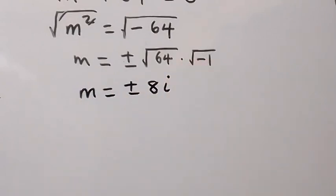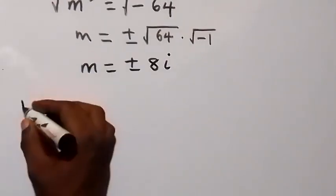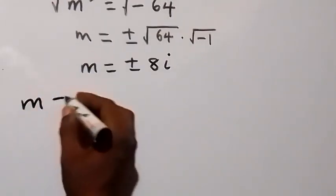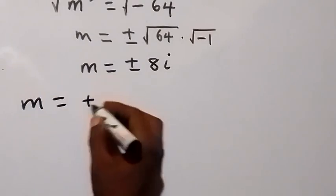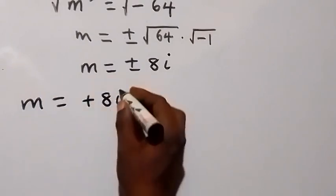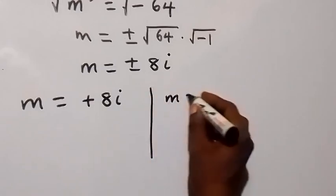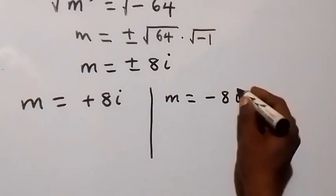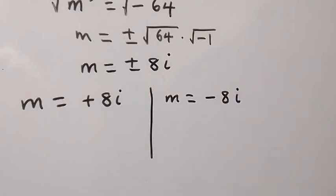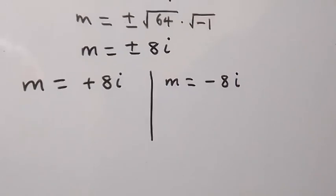So we have two values for m: m = +8i and m = -8i. We should recall that we defined m = x+4.